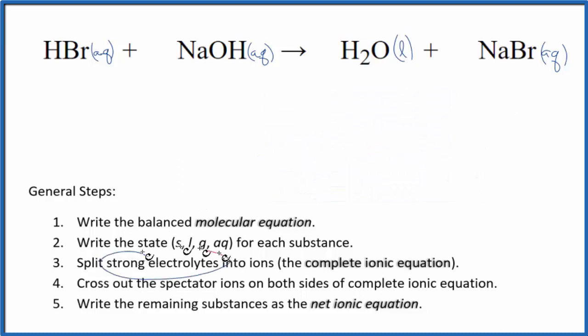Now we can split the strong electrolytes into their ions. This will be the complete ionic equation. Hydrogen group 1 has a 1 plus ionic charge. And then that bromine there, that bromide ion, that's 1 minus. So we'll have H plus, plus Br minus.